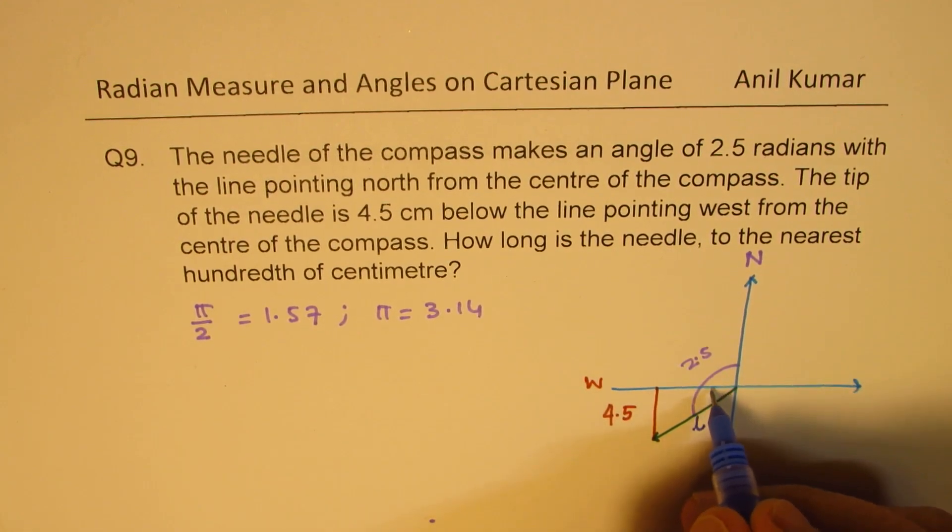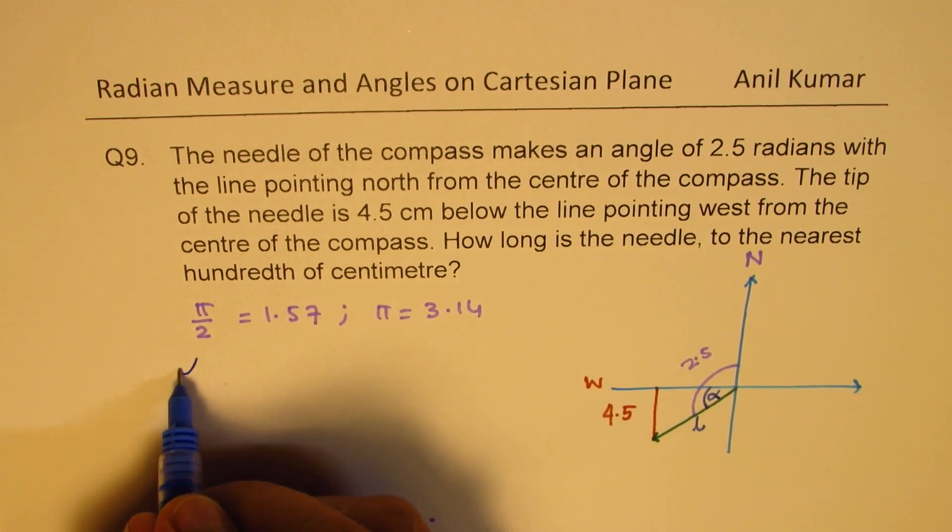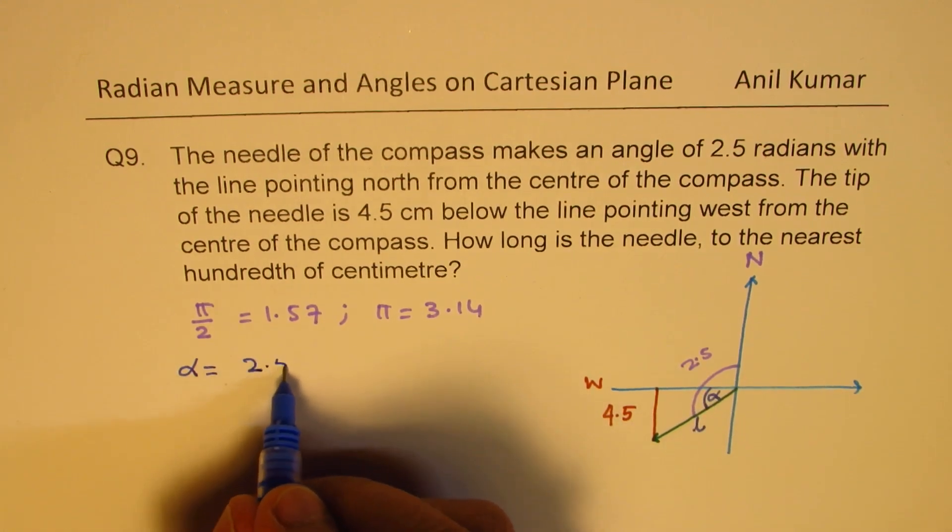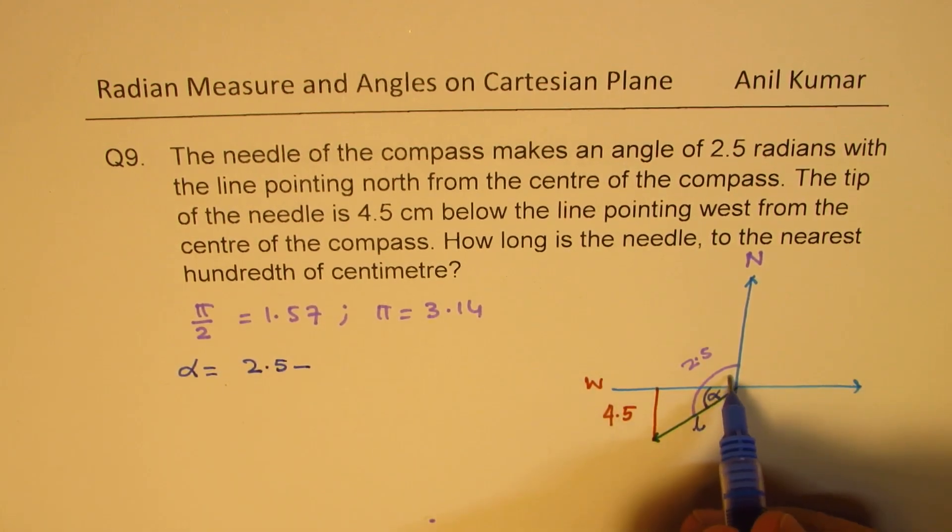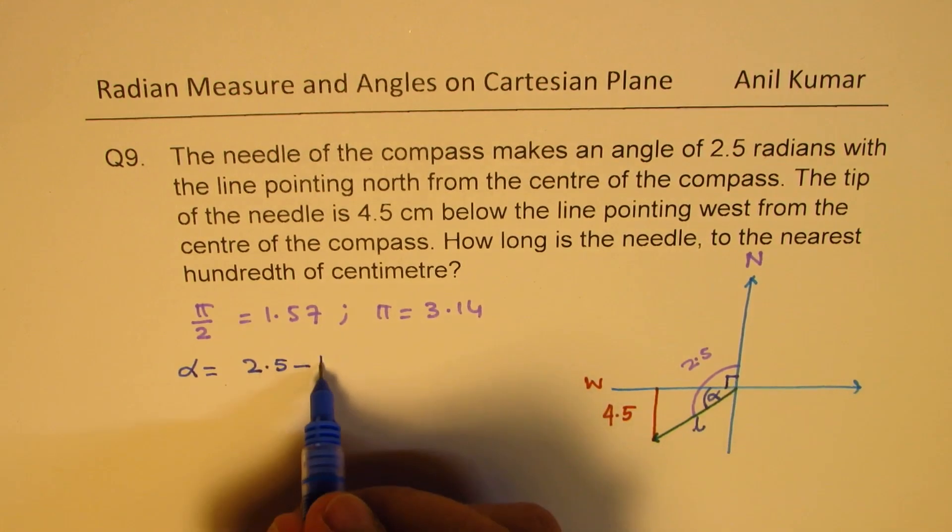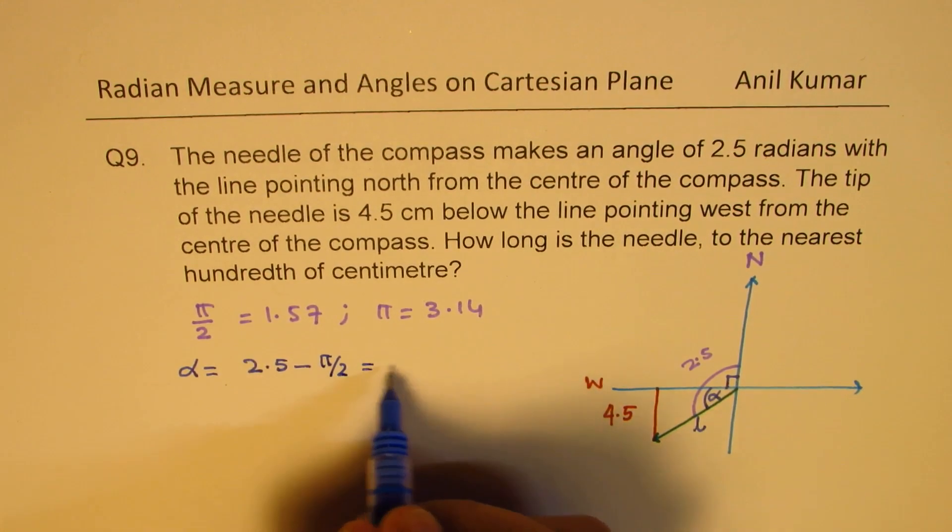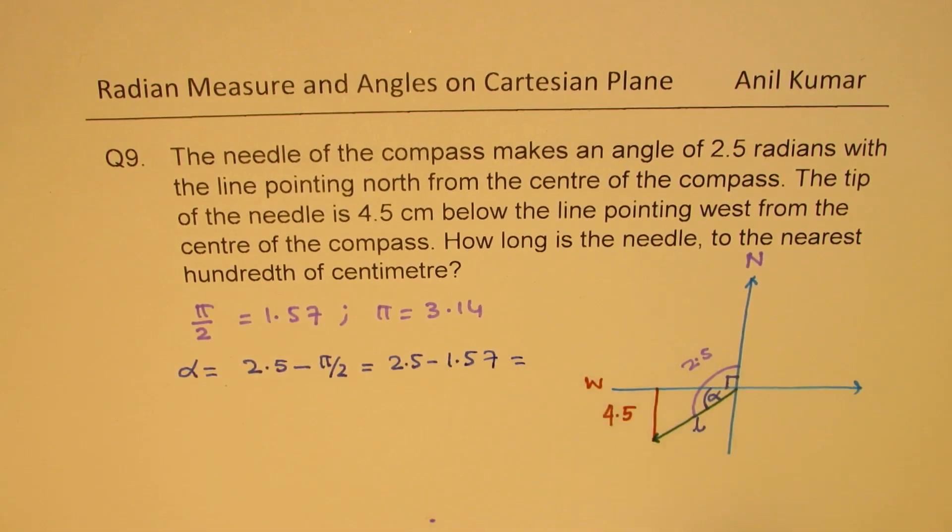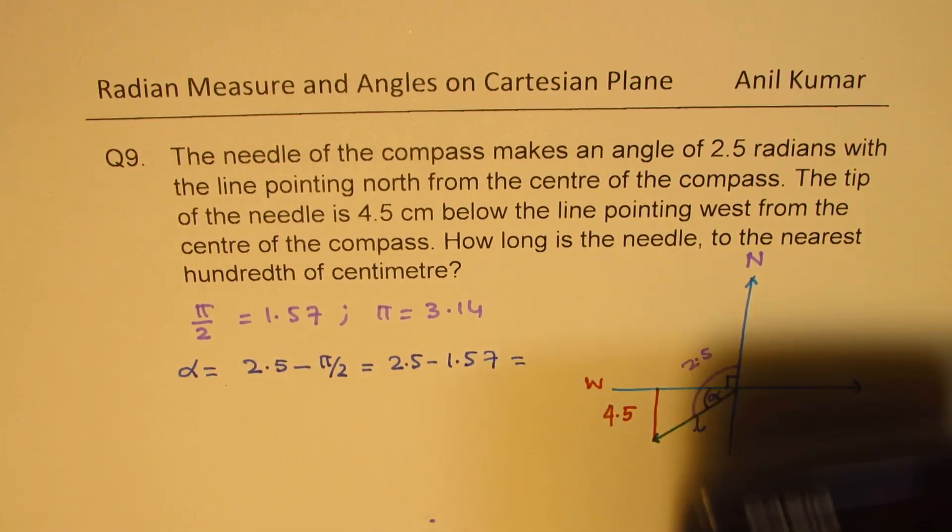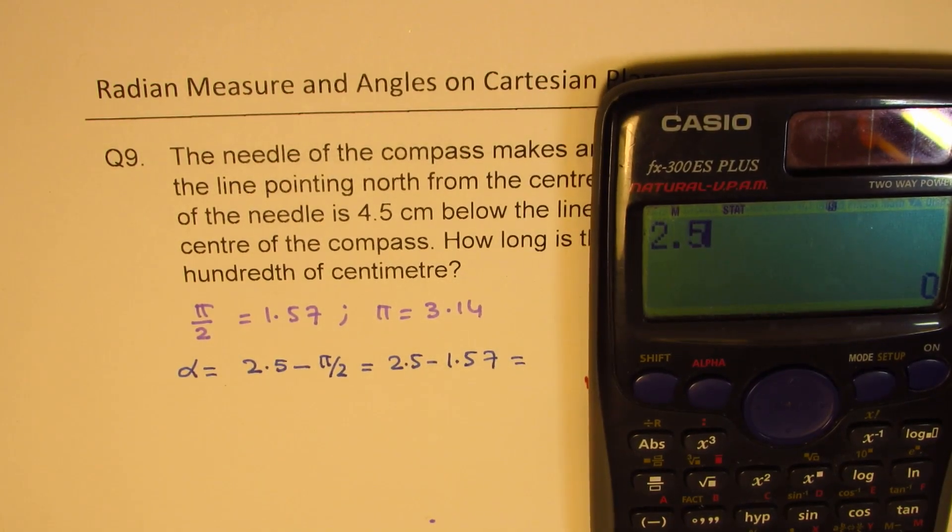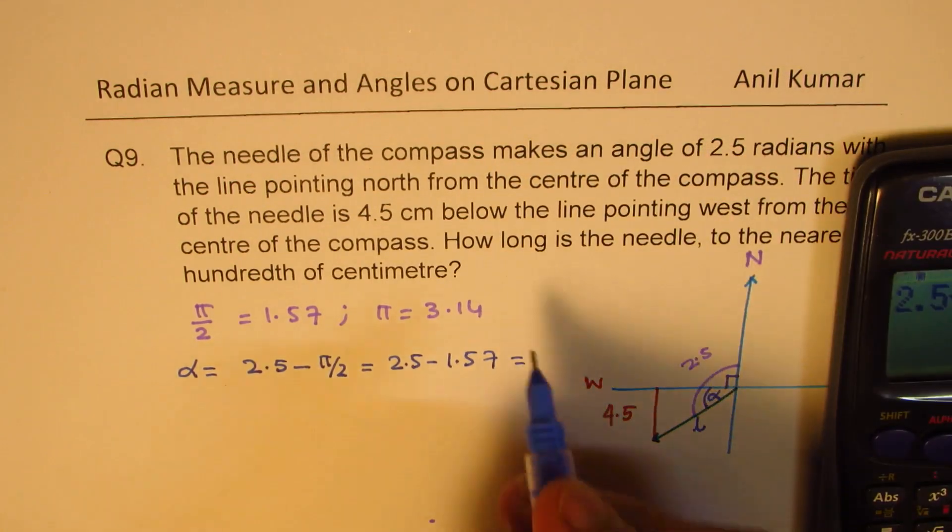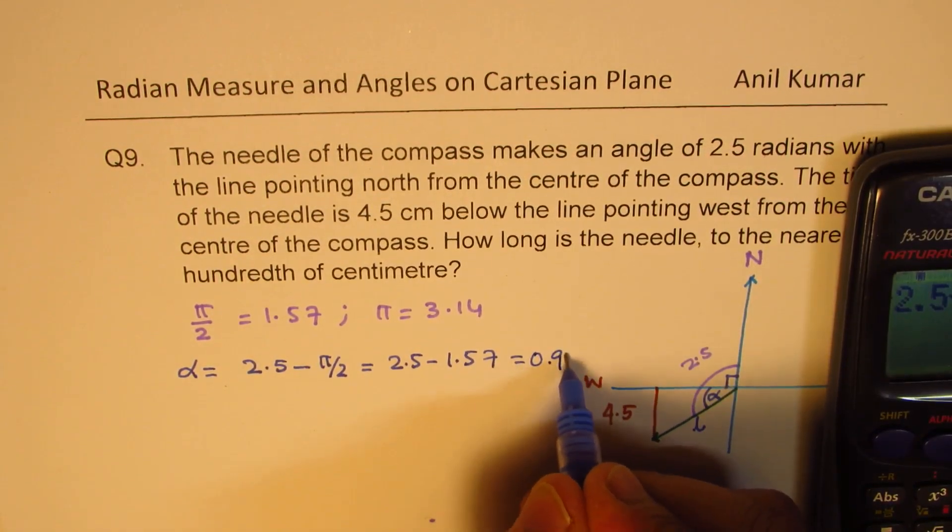So, let us figure out first the acute angle alpha here. Acute angle alpha will basically be equal to 2.5 radians. Let us take away this pi by 2, which is the same as 2.5 take away 1.57. So, let us use calculator. We have 2.5 minus 1.57, which gives us 0.93. So, approximately 0.93.